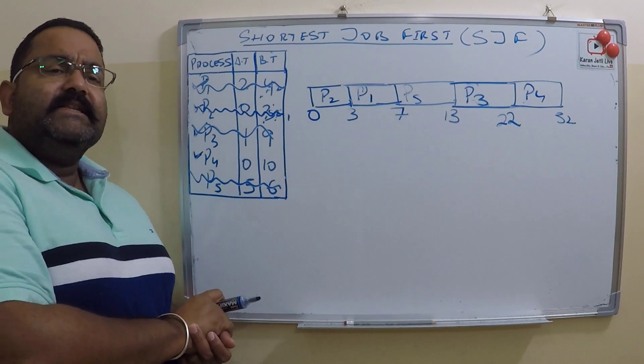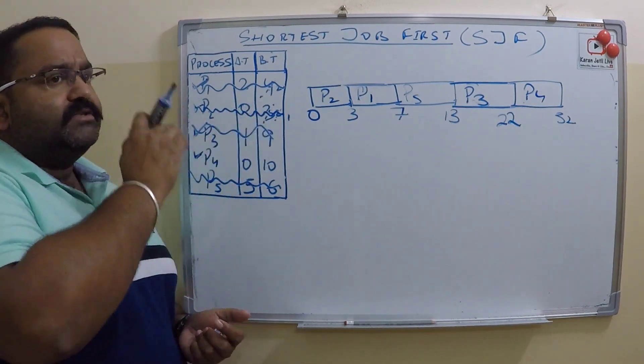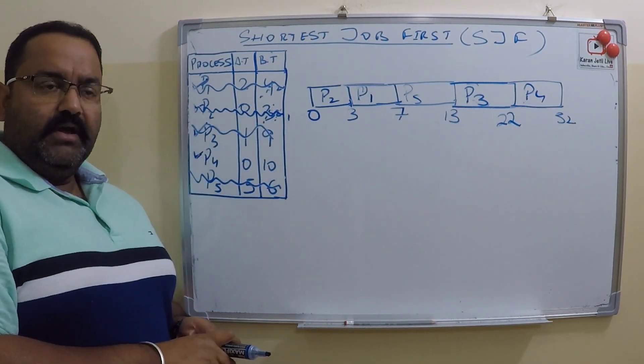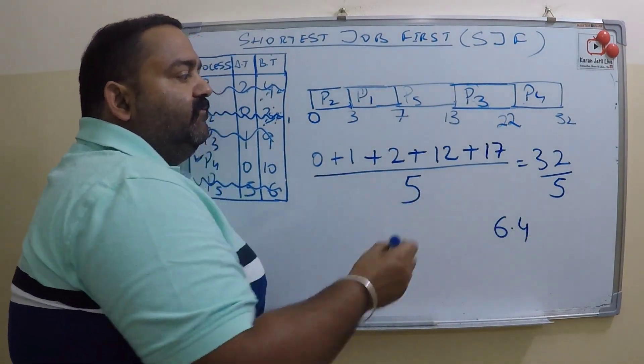This is the Gantt chart for Shortest Job First. This will be the average waiting time.